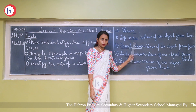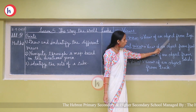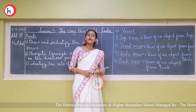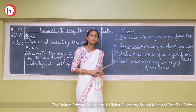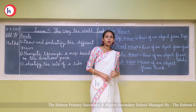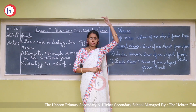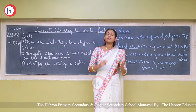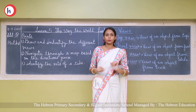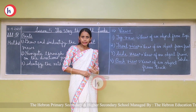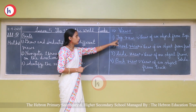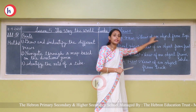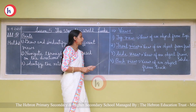What is the top view? The view of an object from the top is called the top view. It is also called a bird's eye view. Why is it called a bird's eye view? Because when birds fly in the sky, they are at the top and they can see only the top view.